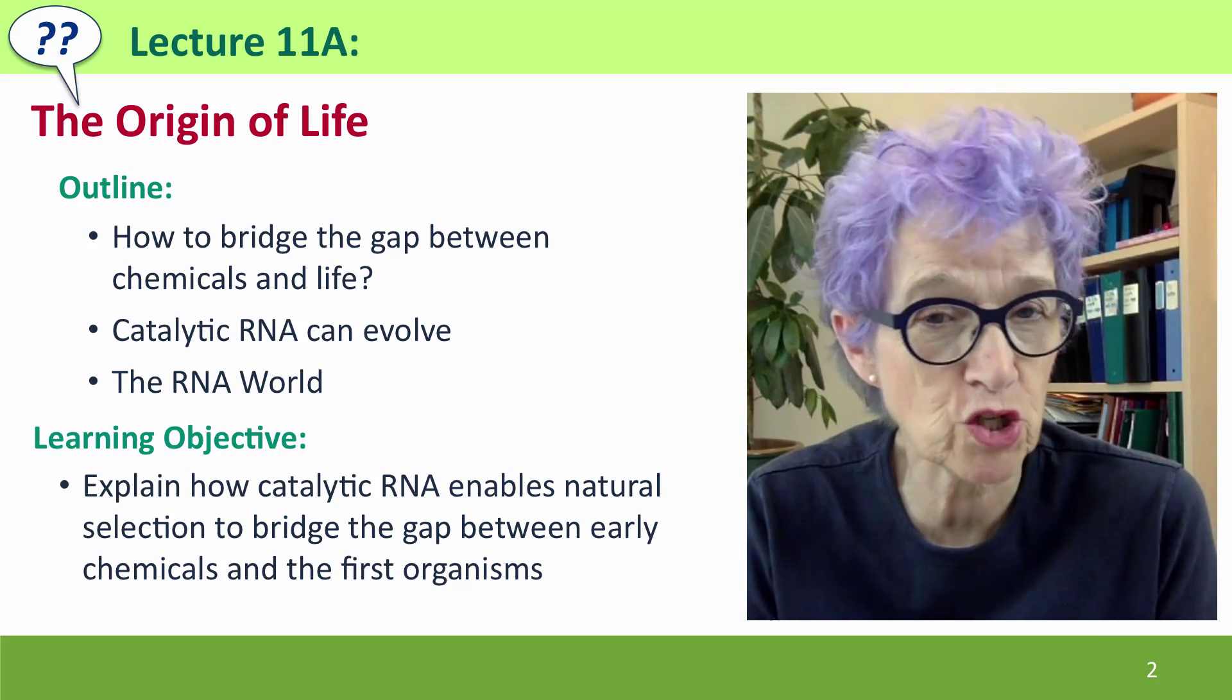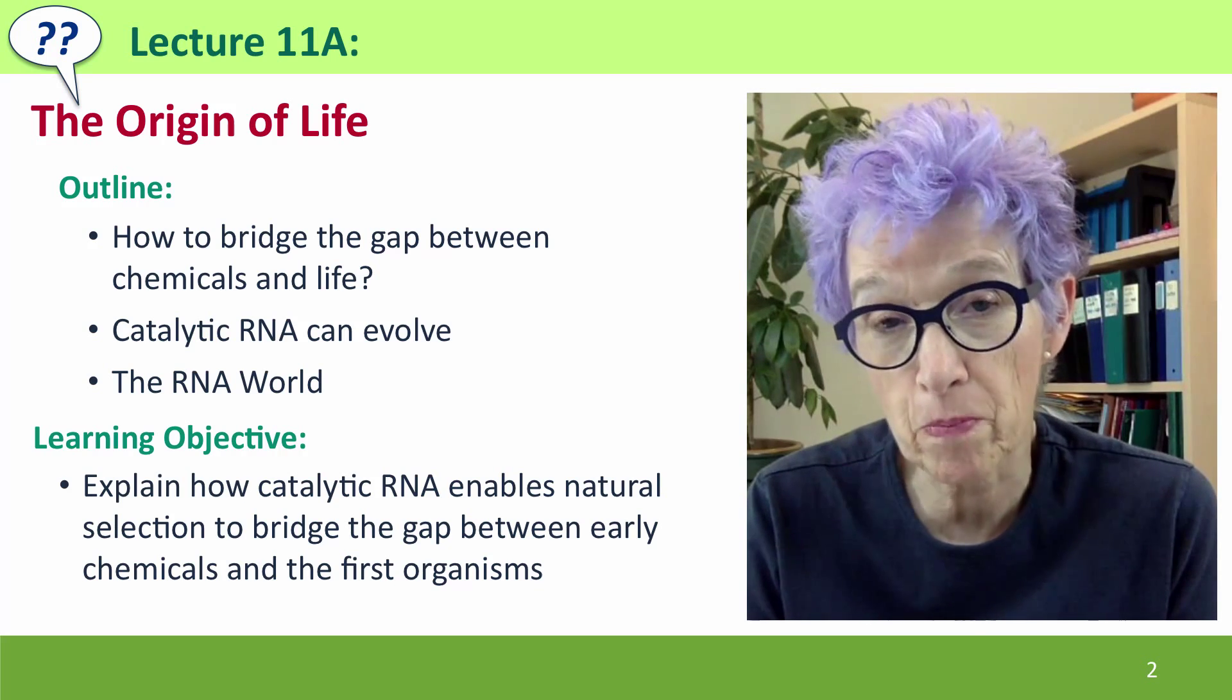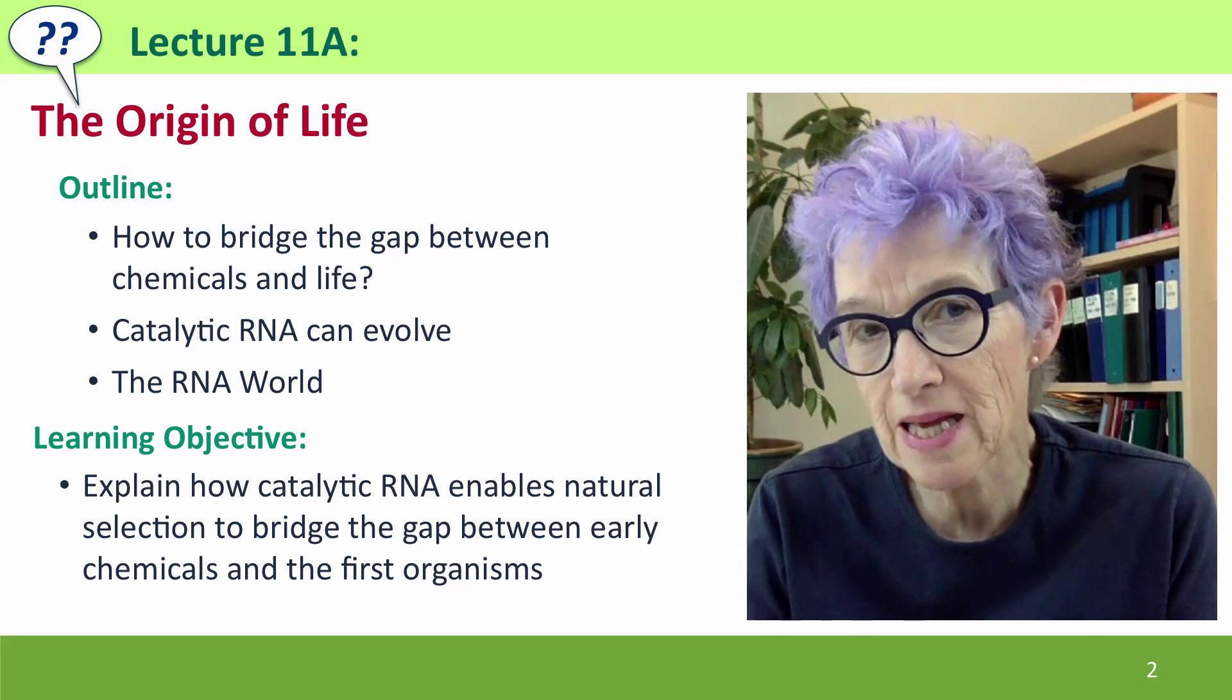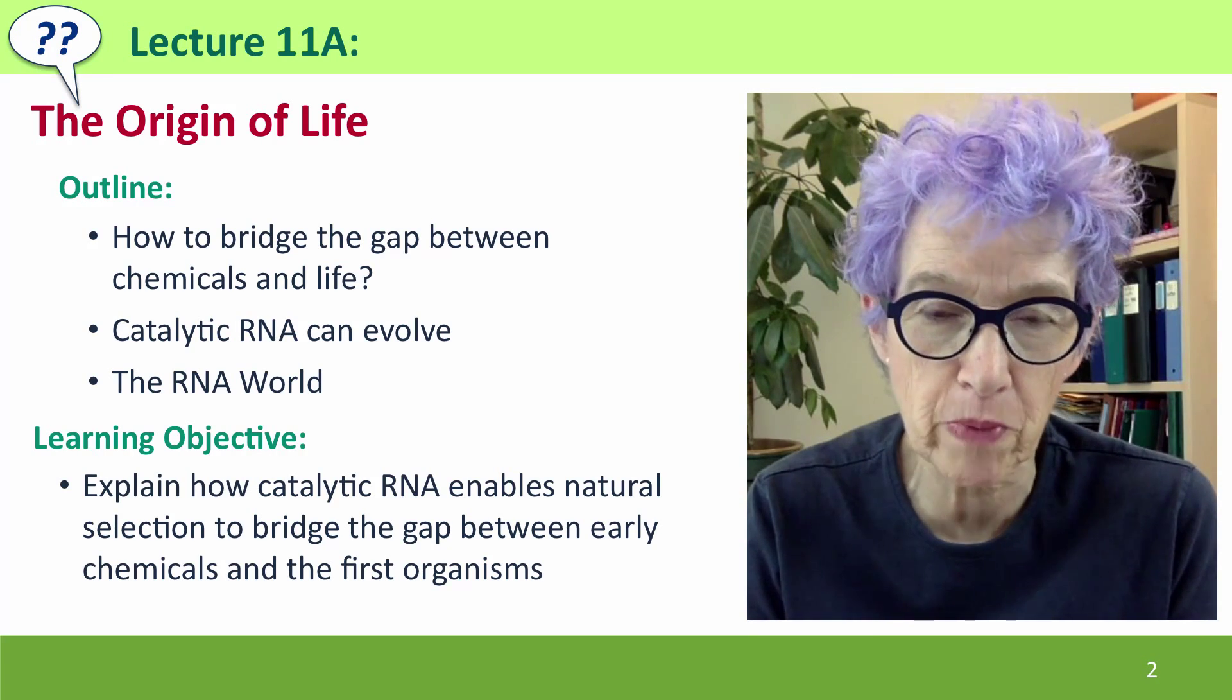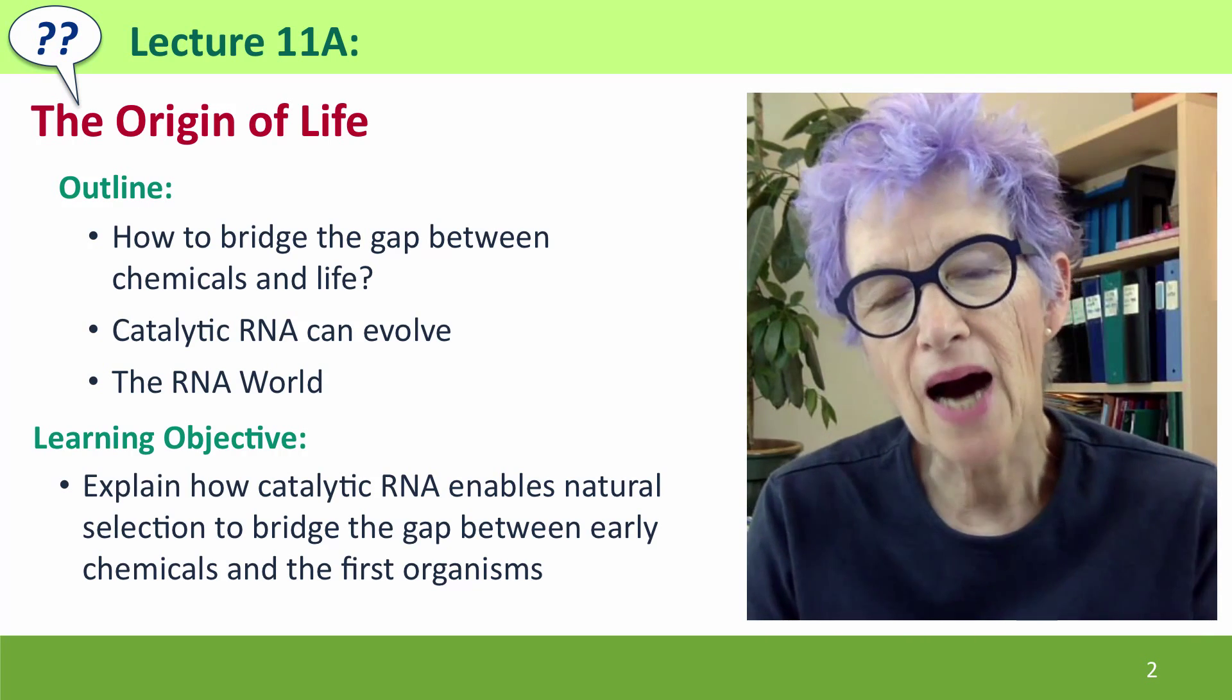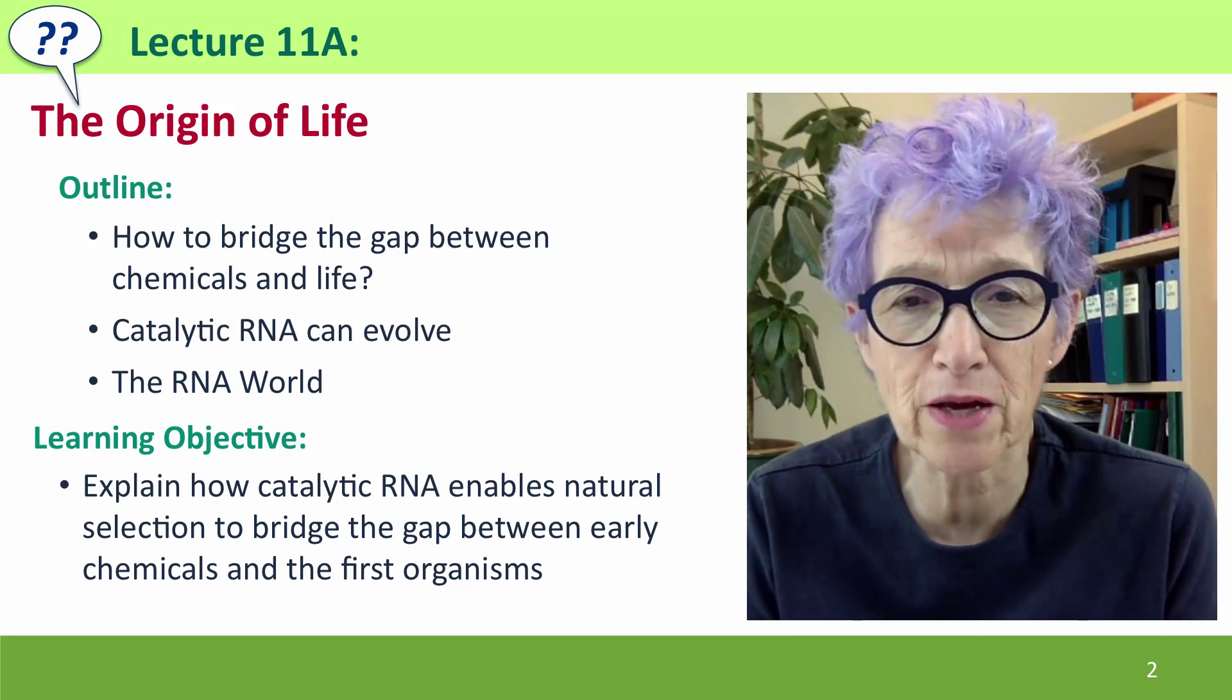All of these approaches are going to leave a gap between the simple chemicals that we know were produced on our planet and what we can infer about the properties of the first living organisms. Fortunately, that gap has been bridged now by molecular biology, by a kind of molecule called catalytic RNA, which makes possible a new kind of early life form on the planet, the RNA world.